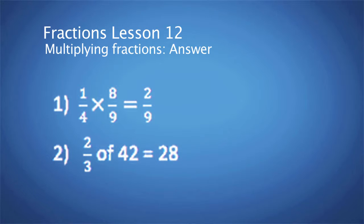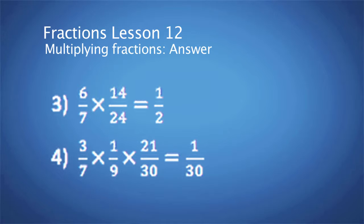Question 3: 6 over 7 times 14 over 24 is equal to half. Question 4: 3 over 7 times 1 over 9 times 21 over 30 is equal to 1 over 30.